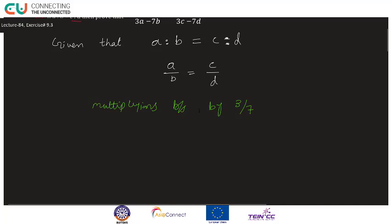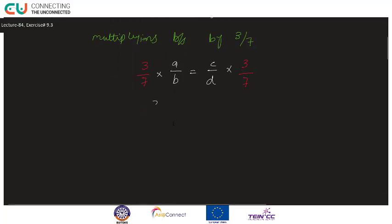So mere paas hoga: 3 upon 7 multiplied by a upon b equals 3 upon 7 multiplied by c upon d. Maine left hand side aur right hand side dono ko 3 upon 7 se multiply kar liya. Multiply karte hain toh aayega: 3A divided by 7B equals 3C divided by 7D.